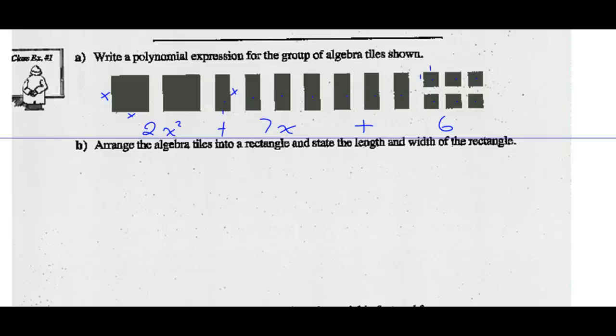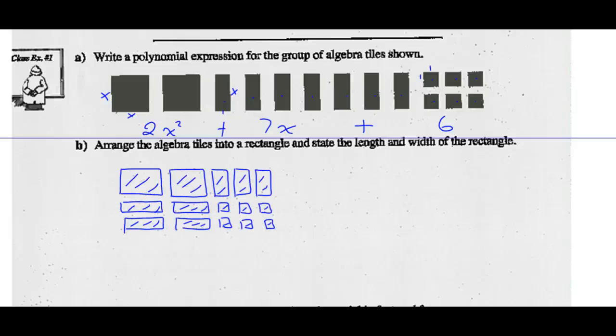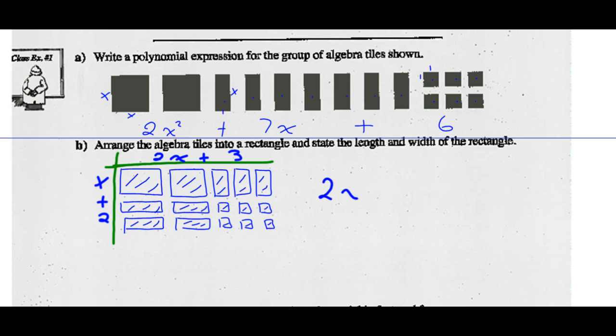Try and rearrange these tiles into a rectangle and see what you get. Here we have it — I've arranged this into a rectangle. If I make a little chart, what I have here is 2X plus 3 by 1X plus 2. Those should be your factors: 2X plus 3 times X plus 2.